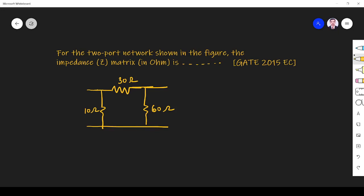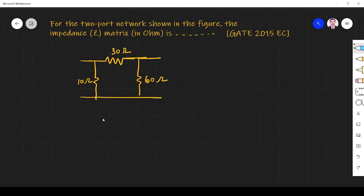Hi friends, in this video let us solve a network theory question from GATE 2005 ECE paper. The question is: for the two-port network shown in the figure, the impedance matrix in ohms is given by dash. So we have to find the impedance matrix.